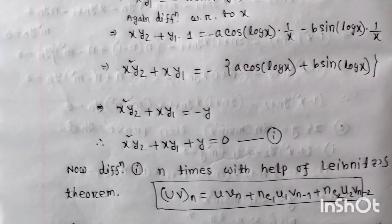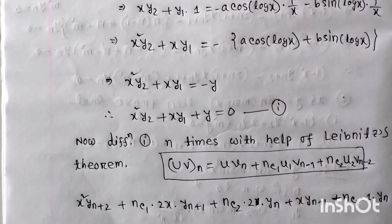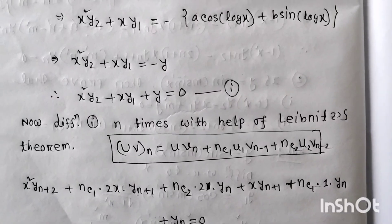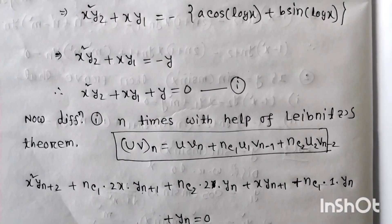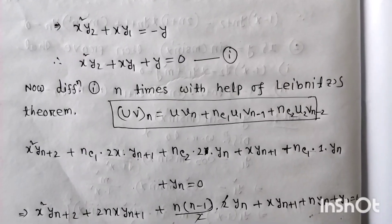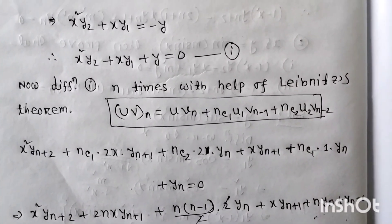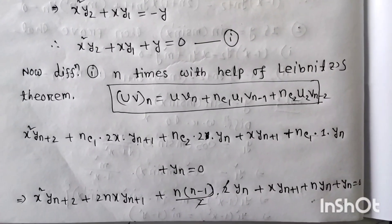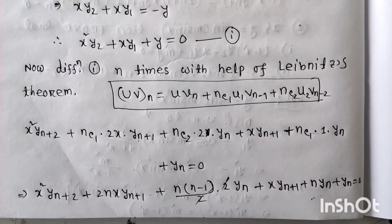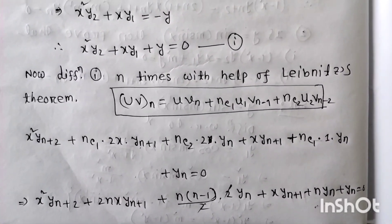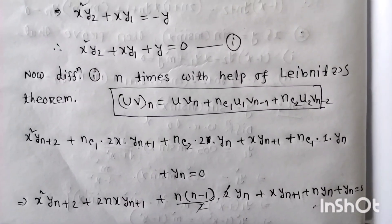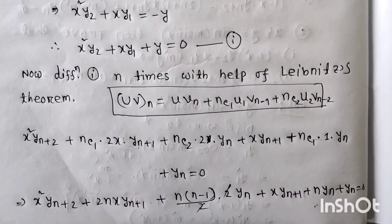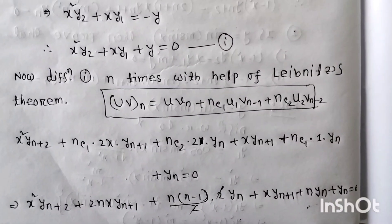Now we apply the Leibniz formula for the nth derivative: (uv)_n = u·v_n + nC1·u1·v_(n-1) + nC2·u2·v_(n-2) + ... Applying this to x²·y2 + x·y1 + y = 0, we differentiate n times. For the term x²·y2: taking u = x², v = y2, we get x²·y_(n+2) + nC1·(2x)·y_(n+1) + nC2·2·y_n.